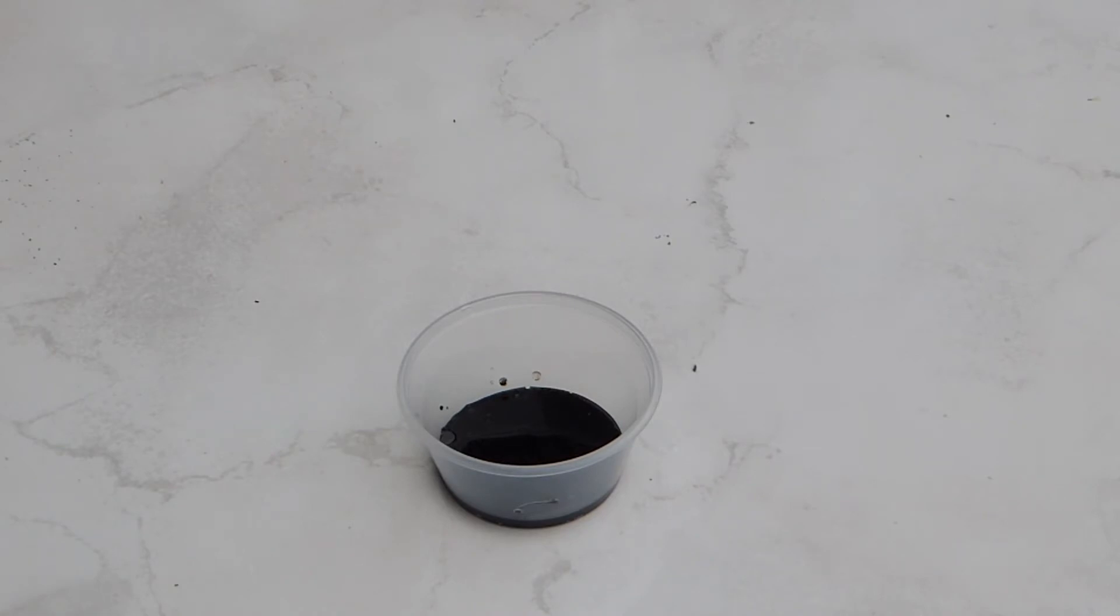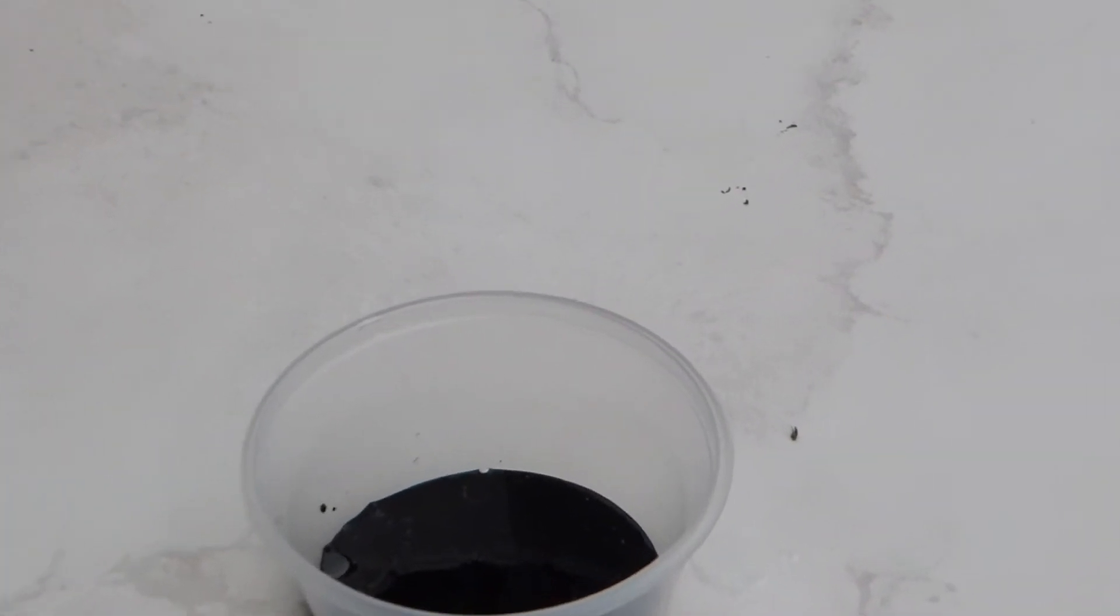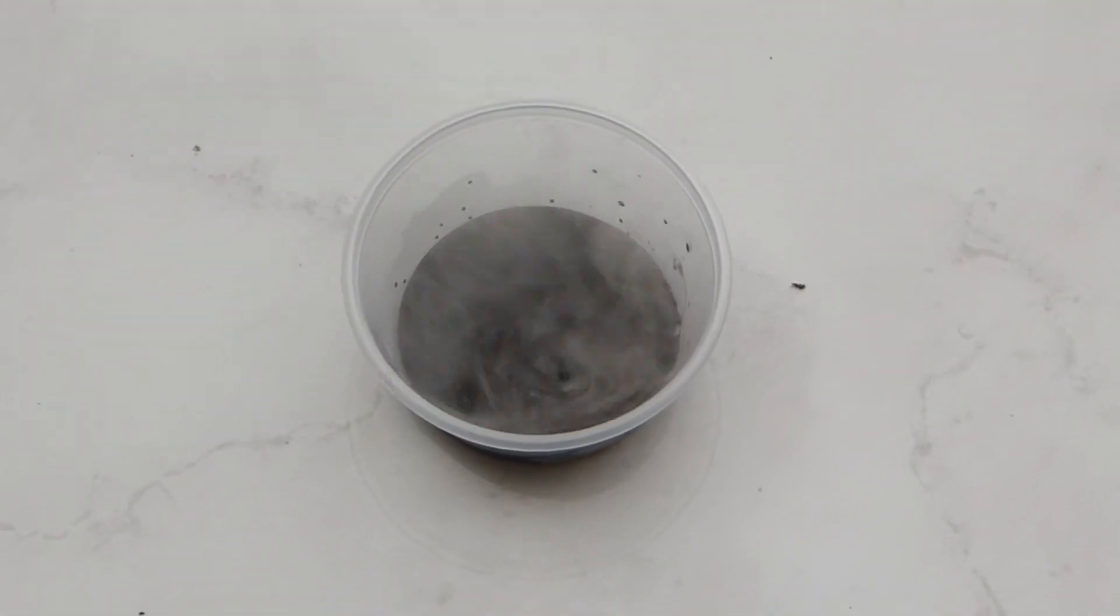So the reaction is permanganate and glycerol. Glycerol is a sugar. The resultants of the chemical products: potassium carbonate, manganese oxide, and CO2 and water. Starting to bubble, okay here it goes.